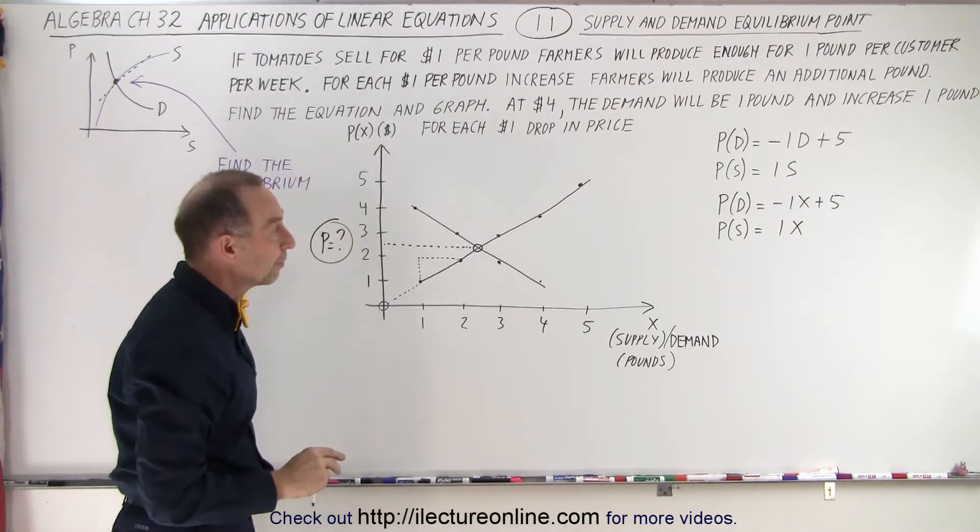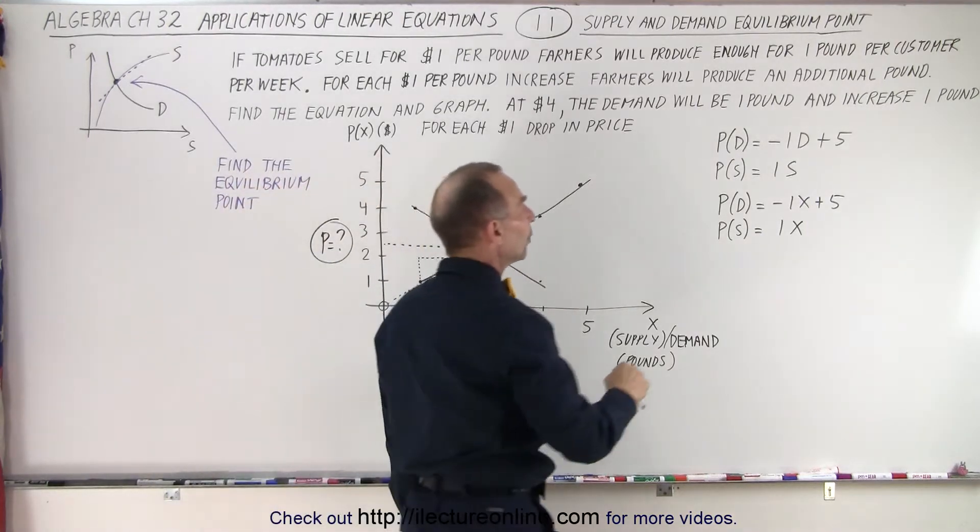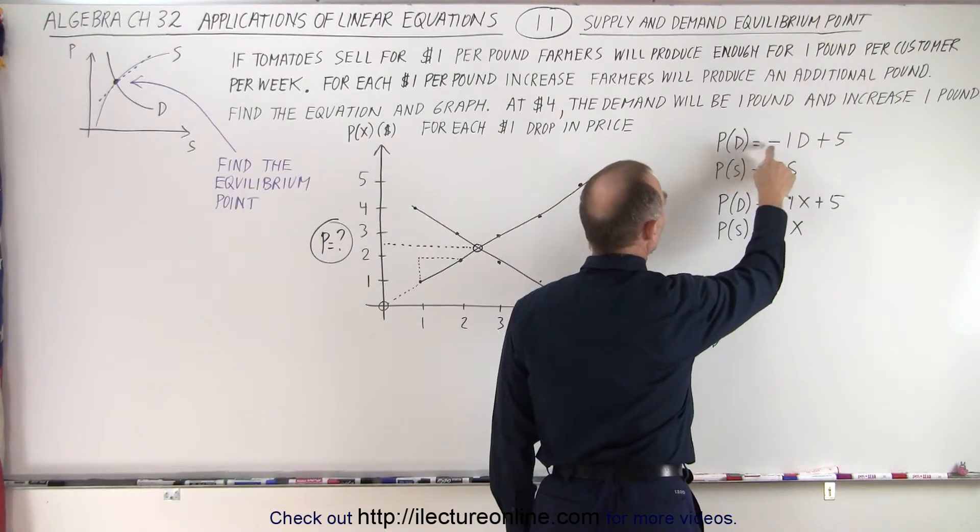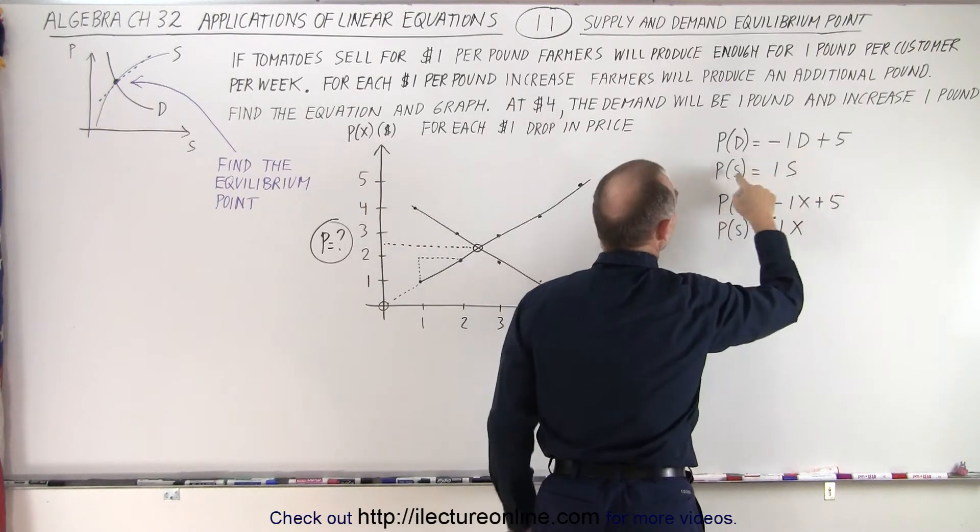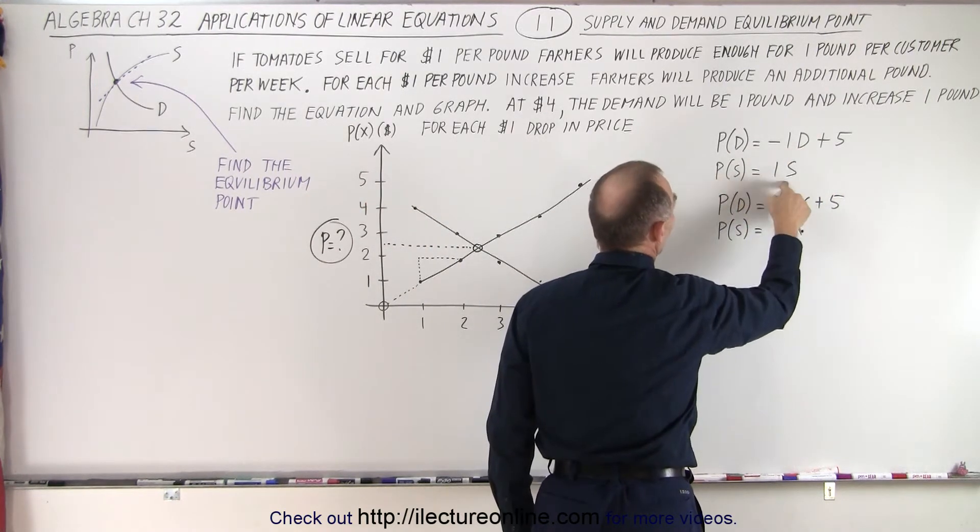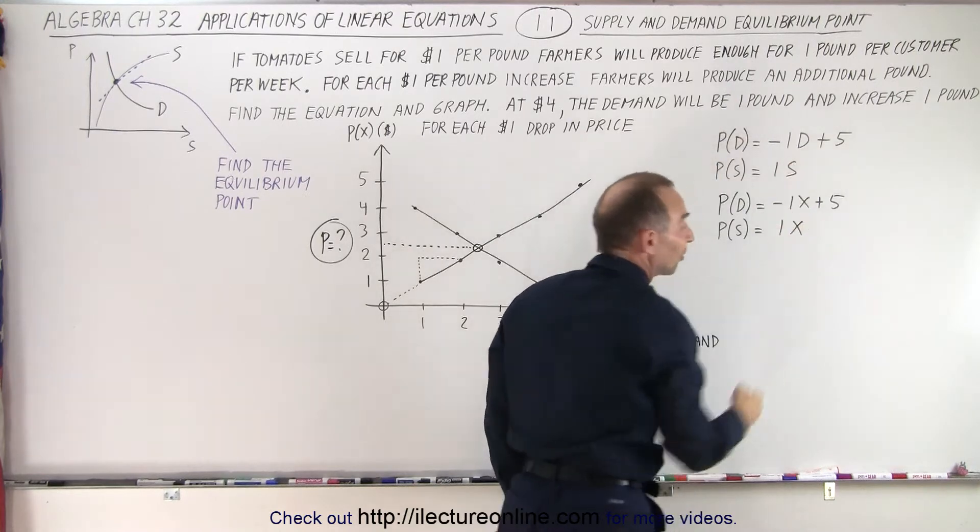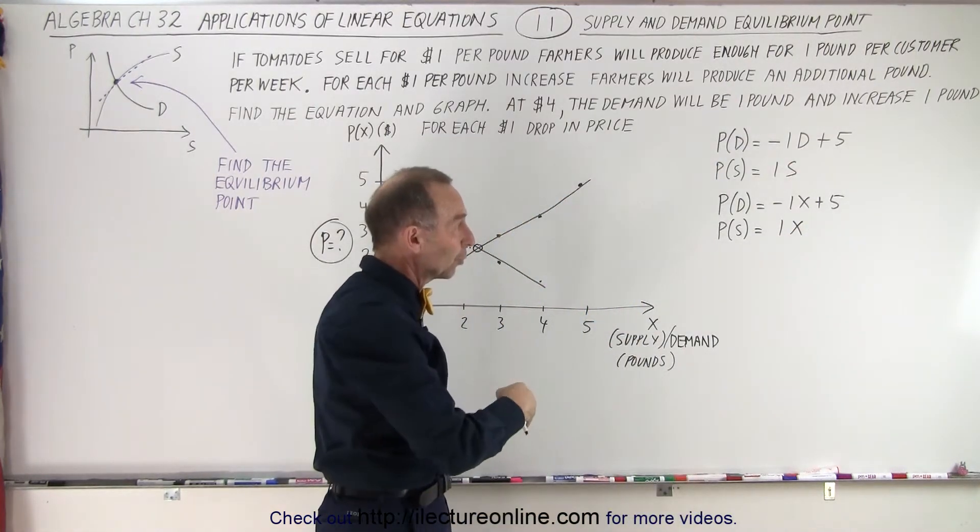So we go back to the equation we had, notice the demand equation would be minus 1d plus 5, 5 would be the intercept right here, and then the supply equation would be equal to 1s. Of course, instead of d and s, because they're different variables, let's simply use x for both.